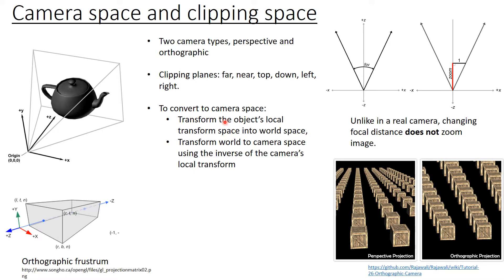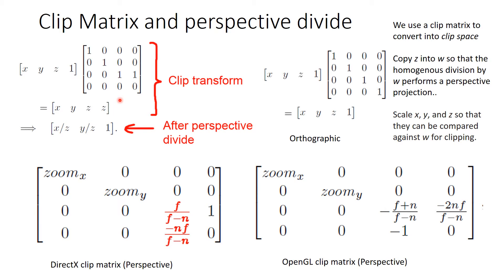So to convert to camera space, we have to go from local space into world space, and then transform the world space to the camera space.